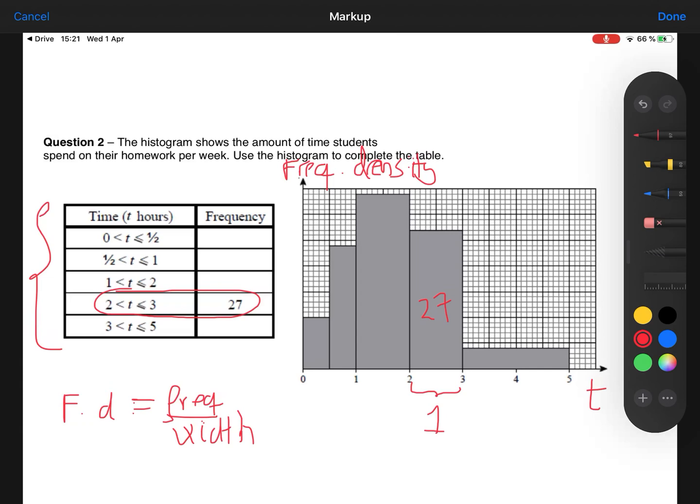So the height here, that height there, which is the height of the bar, that's a height of 27. That's 27 because I just worked it out. So my frequency density for that bar was the frequency of 27 divided by 1. So the frequency density is 27.